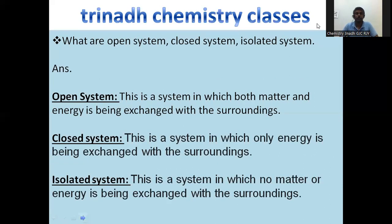Next: what are open system, closed system, and isolated system? Open system is a system in which both matter and energy are exchanged with the surroundings. Closed system is a system in which only energy is exchanged with the surroundings, but not matter. Isolated system is a system in which neither matter nor energy is exchanged with the surroundings.